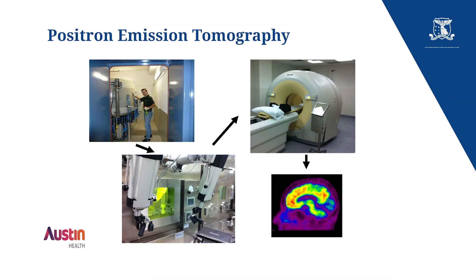PET starts with a cyclotron, which is a particle accelerator. You drop protons into it and by alternating magnetic and electrical fields, it accelerates these to a speed that's close to the speed of light and they slam into a target material, making the nucleus unstable and it becomes a positron emitter. The positron emitting compound is then transferred into a hot cell and it's labelled to a chemical that tags to the particular aspect of the patient that you want to image.